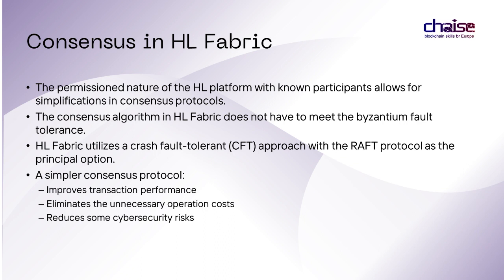In permissionless blockchain networks, anyone including untrusted or malicious participants can join the network. Therefore, a Byzantine fault-tolerant consensus protocol is needed to identify and expel malicious actors. To ensure that the majority of consensus participants are benevolent, the attack costs must exceed the economic benefits of the attack, or the attacker's stake is seized.